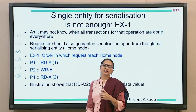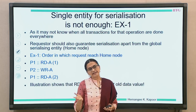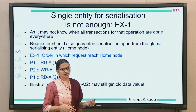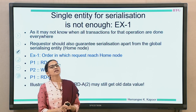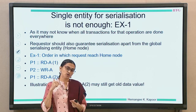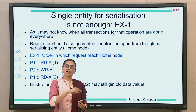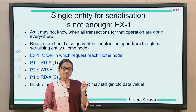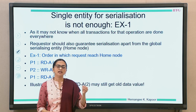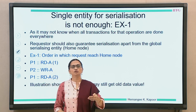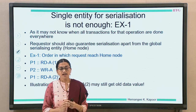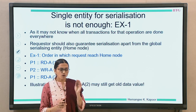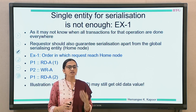Not only the home node, but the requester and owner must also wait for a request to complete with respect to them before servicing future requests for the same block. To understand what can go wrong, we look at two examples. The first example shows that a single serializing entity — the home — is not sufficient. In this example, P1 sends a read request for block A, then P2 sends a write request for the same block A, and then P1 sends another read request for block A. This is the order in which requests reach the home node.